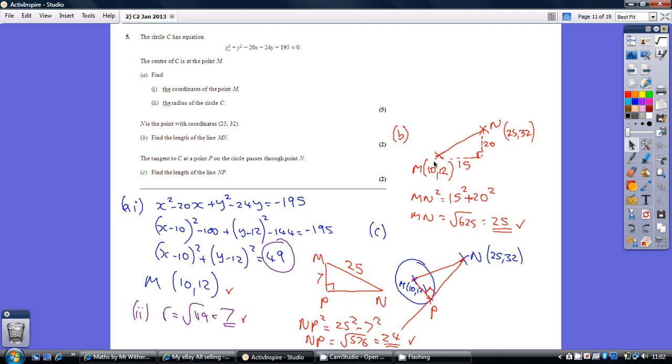So, simple Pythagoras, we can work out that MN is 25. Now, for part C, again, a sketch really makes this a lot clearer. We have this triangle here. We're being asked to work out the length NP.